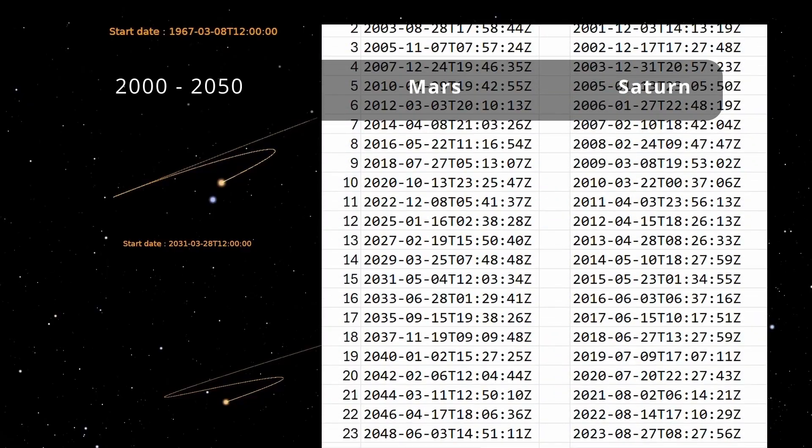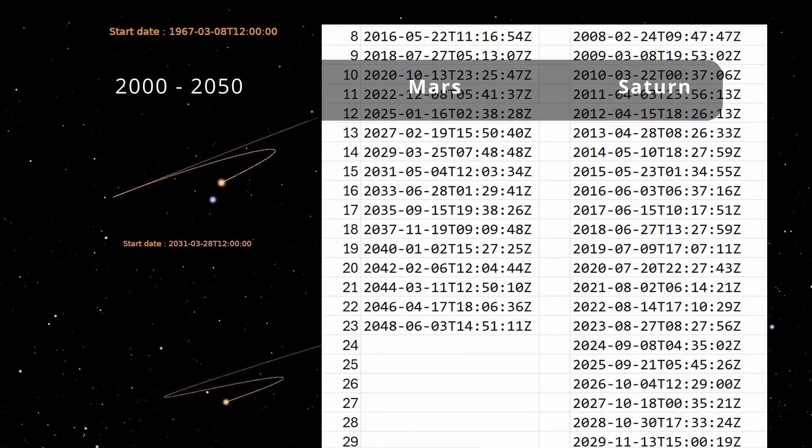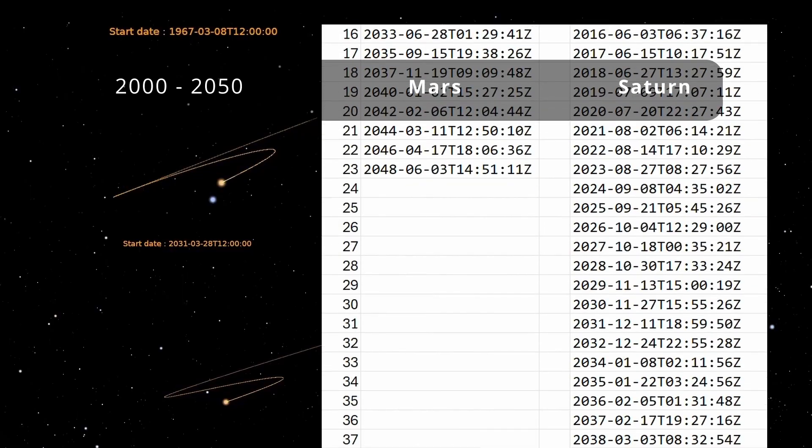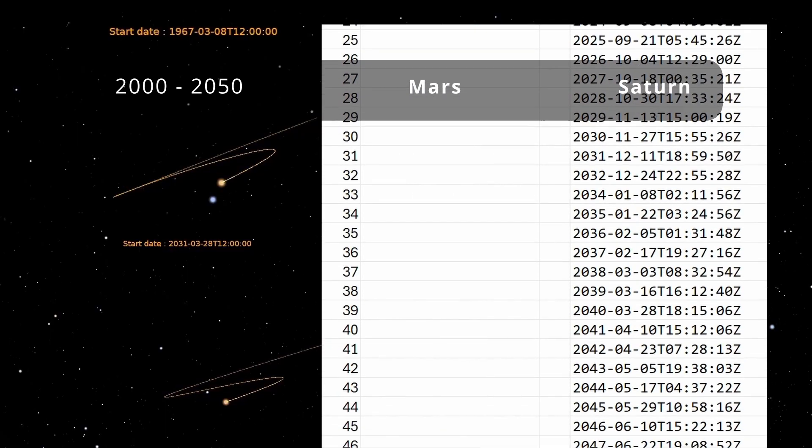In a span of 50 years, from year 2000 to 2050, Mars is in opposition 23 times, while Saturn is 48 times.